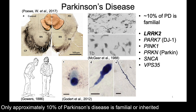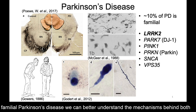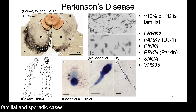Only approximately 10% of Parkinson's disease is familial or inherited and the other 90% arises sporadically. But by studying the genes implicated in familial Parkinson's disease, we can better understand the mechanisms behind both familial and sporadic cases.